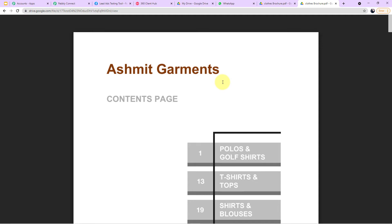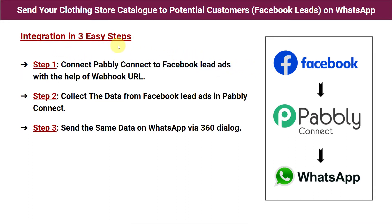Now let me show you how I managed this integration process. Before we start, here are three easy steps. Step one: connect Pabbly Connect to Facebook Lead Ads using a webhook URL — we'll log in to Pabbly Connect and integrate Facebook Lead Ads. Step two: collect the data from Facebook Lead Ads into Pabbly Connect. Step three: send that data on WhatsApp via 360 Dialog, since WhatsApp does not allow sending messages directly — you must use an official WhatsApp API, which is 360 Dialog.